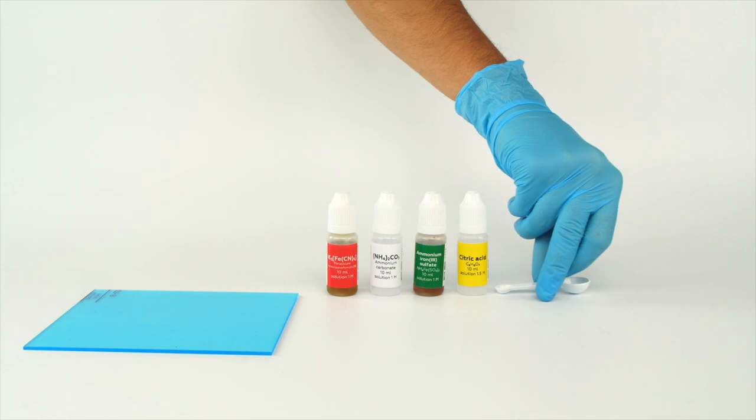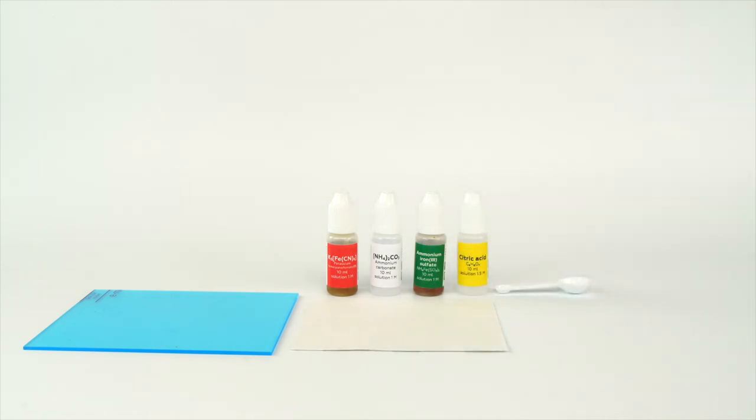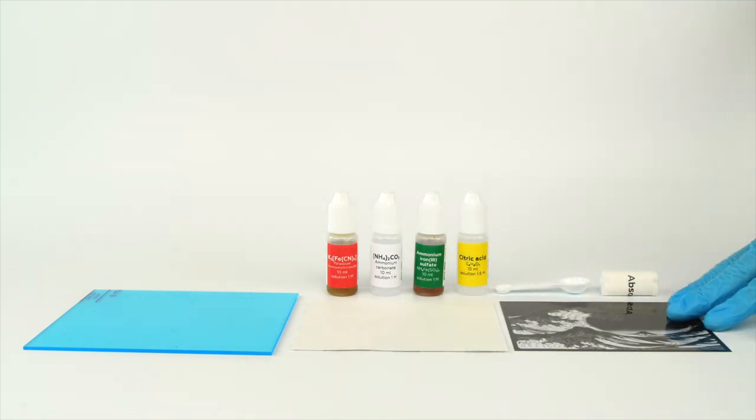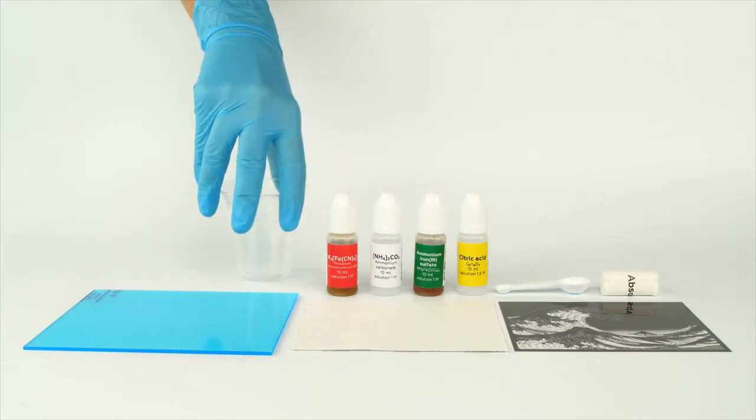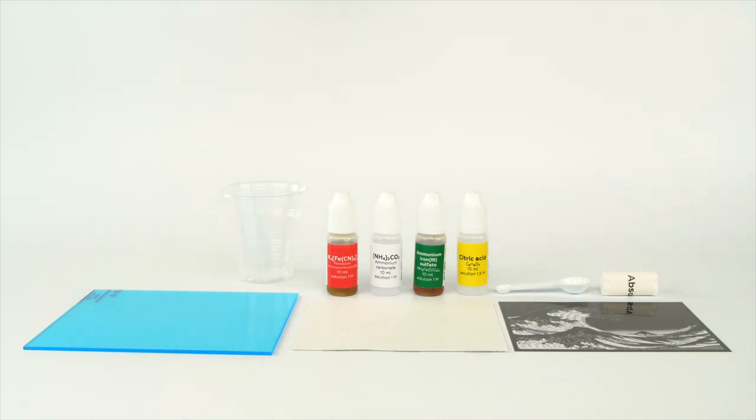Take the plexiglass, a measuring spoon, a sheet of watercolor paper, an absorbent, and the negative image from the experiment set. Take a disposable cup from your starter kit. Make sure you have a working table lamp. Also, keep in mind that you'll need to rinse your print with water at the end of the experiment.